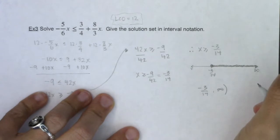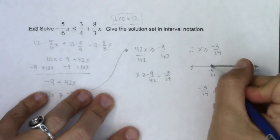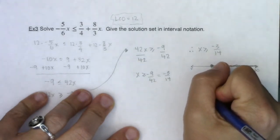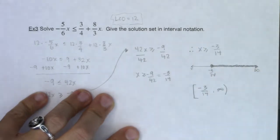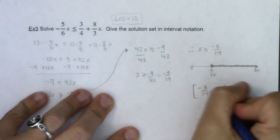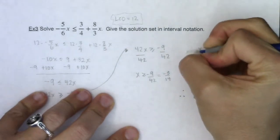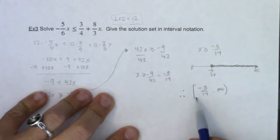Infinities always get parentheses. Negative 3 fourteenths, because I want to include that, I'm going to put my bracket. Okay, and that is my answer. So really, I should put the therefore here, because that is my answer. That is the solution in interval notation.